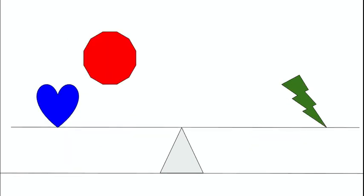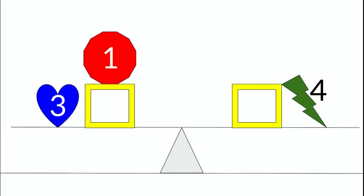Now, let's look back at this. In order for these two sides to be balanced, given the information we now know, the only way it can work is if the blue heart weighs three pounds, the lightning bolt weighs four pounds, and the circle weighs one pound. Adding back in the yellow squares, we can now conclude that they weigh two pounds each, and each side of this scale weighs six pounds.